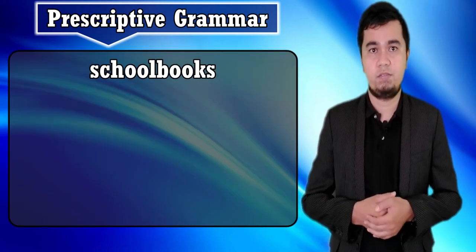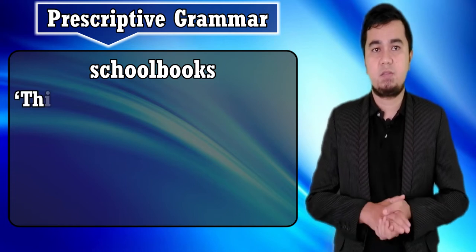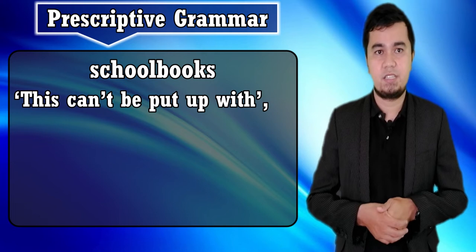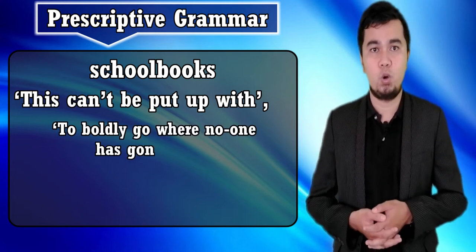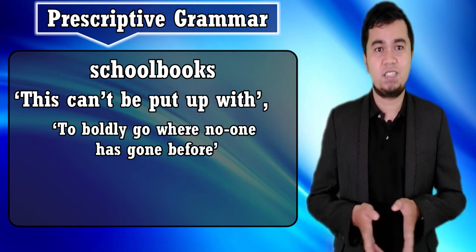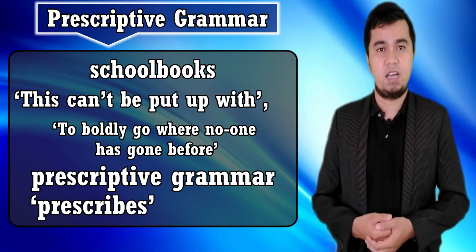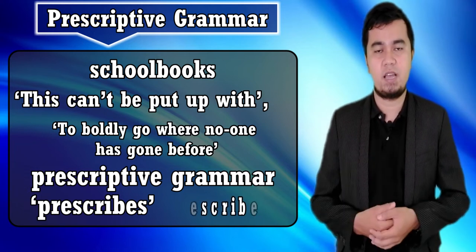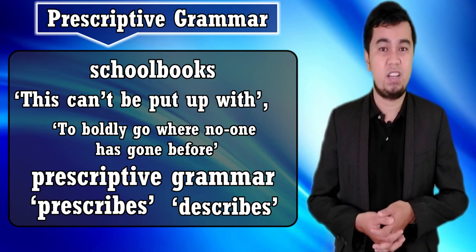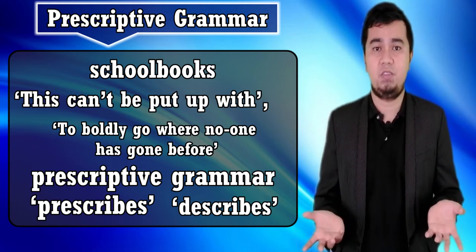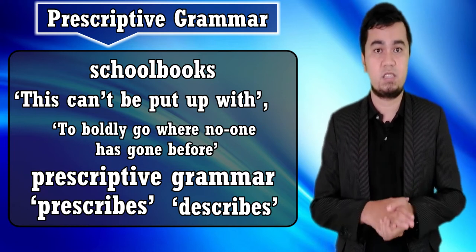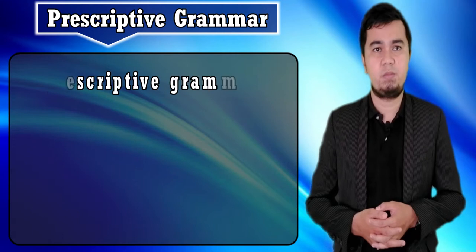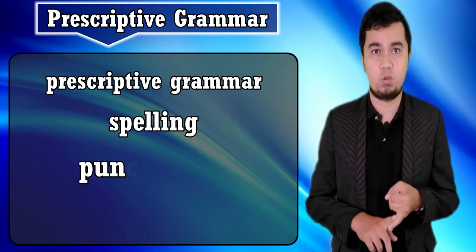Prescriptive grammar is mostly found in school books. For example, in a sentence like 'this can't be put up with,' or the debate about split infinitives such as the Star Trek motto 'to boldly go where no one has gone before.' This is called prescriptive grammar because it prescribes — just like a doctor prescribes a medicine, you cannot just go to the drugstore and buy anything you want; you need a prescription. It is descriptive of what people actually do.